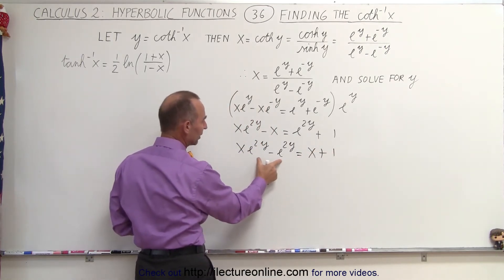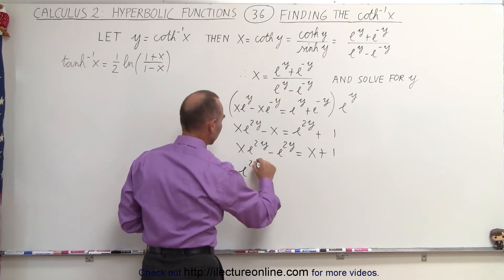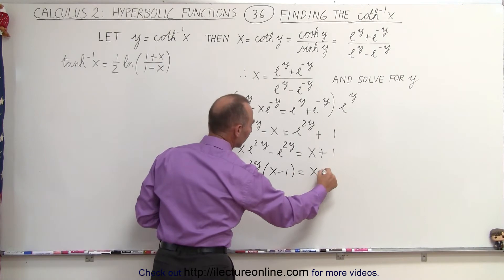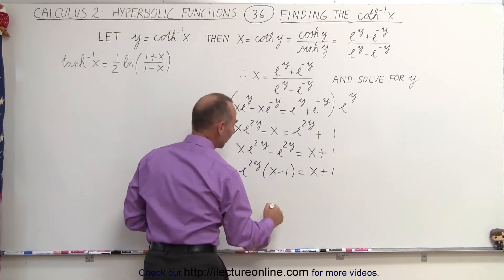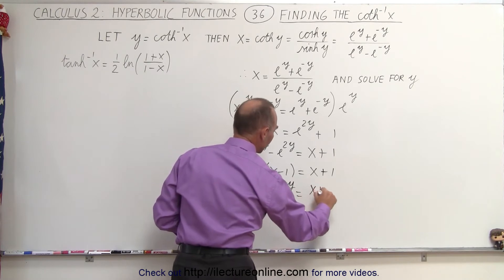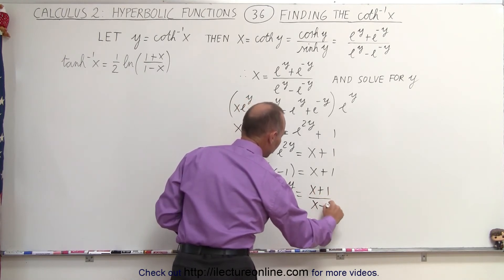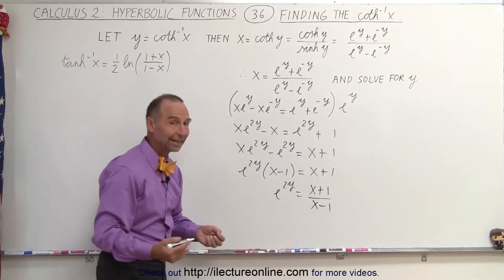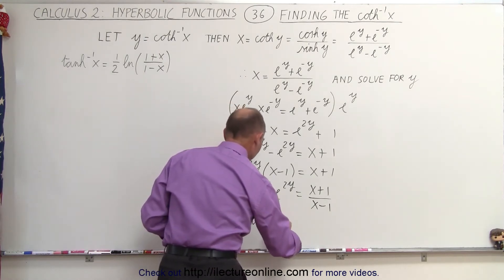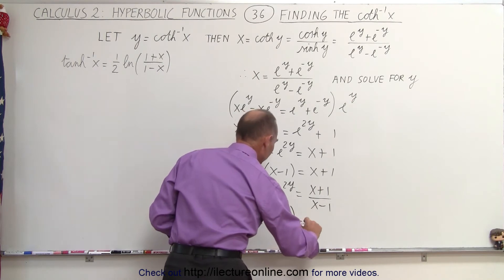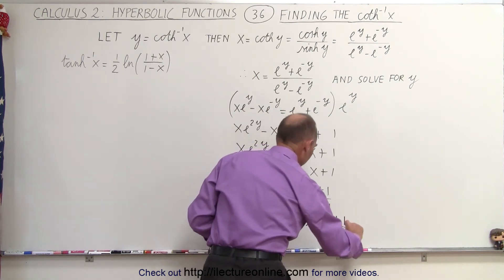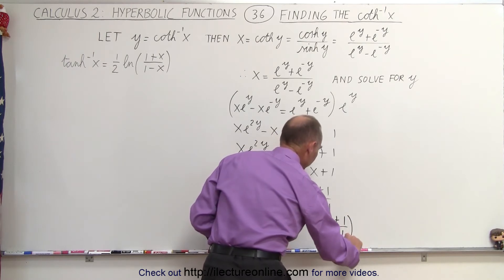Here we can factor out an e to the 2y, which leaves us with x minus 1 equals x plus 1. Then we move that to this side, so we have e to the 2y equals x plus 1 divided by x minus 1. And finally, we're going to take the natural log of both sides. So when we do that, we take the natural log of the left side — e to the 2y — equal to the natural log of the right side: x plus 1 divided by x minus 1.